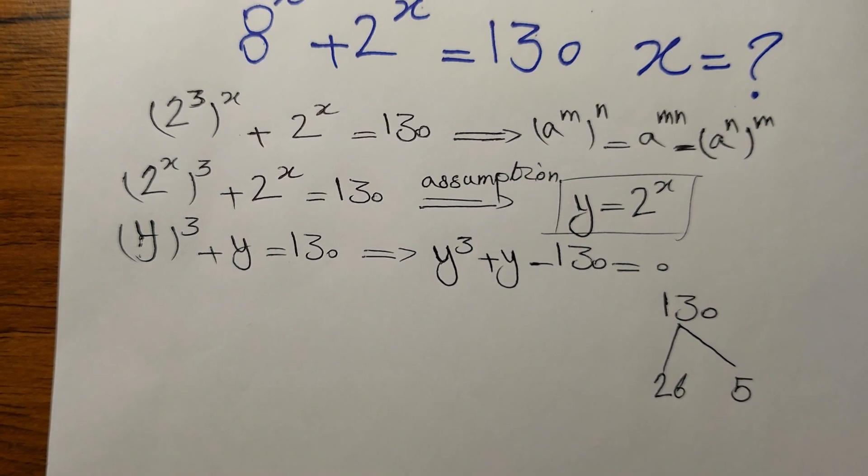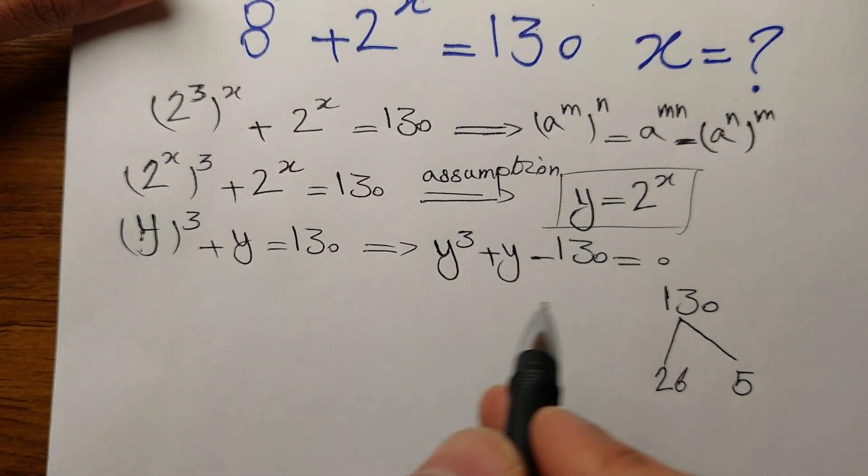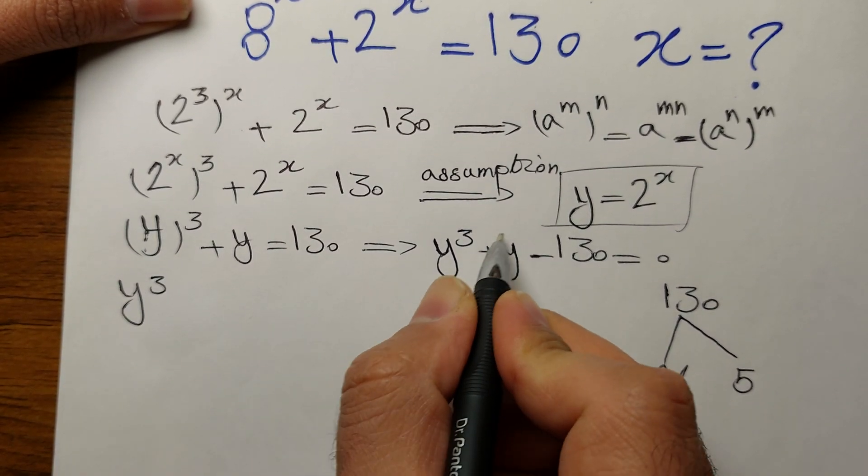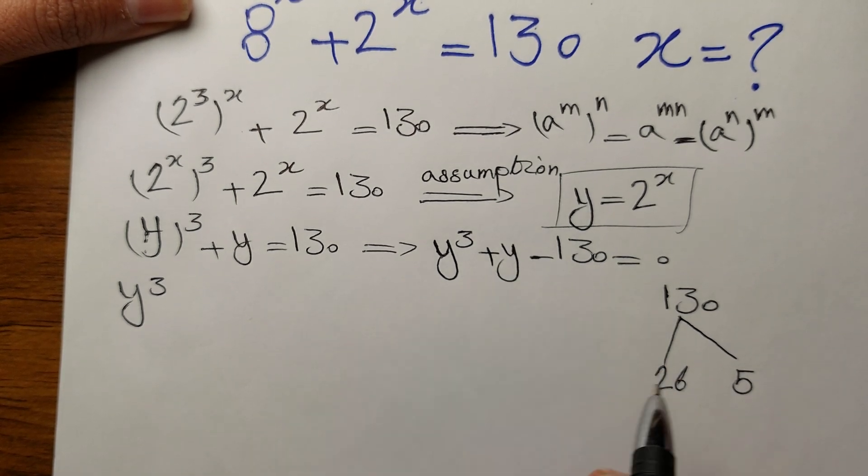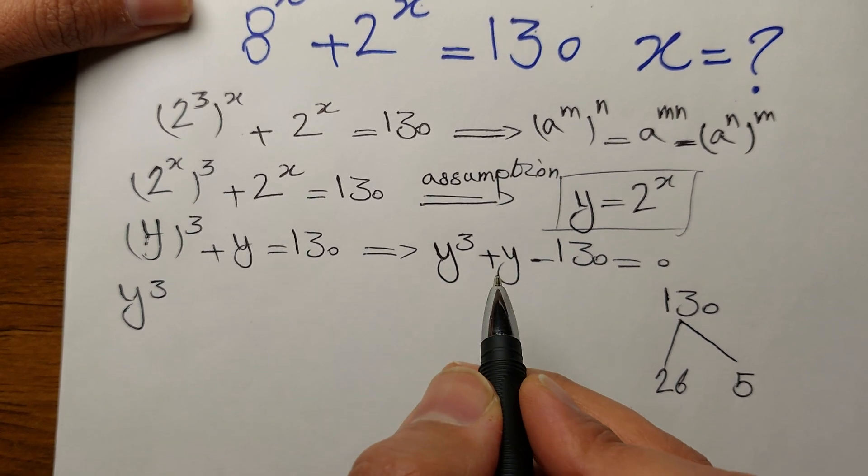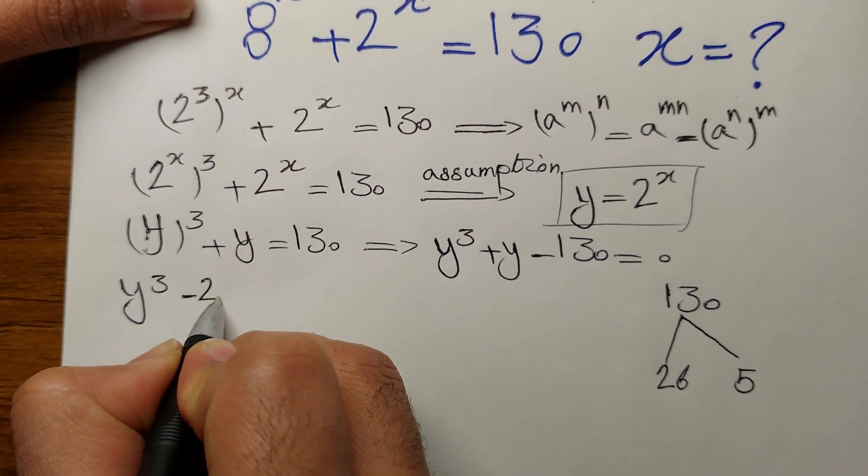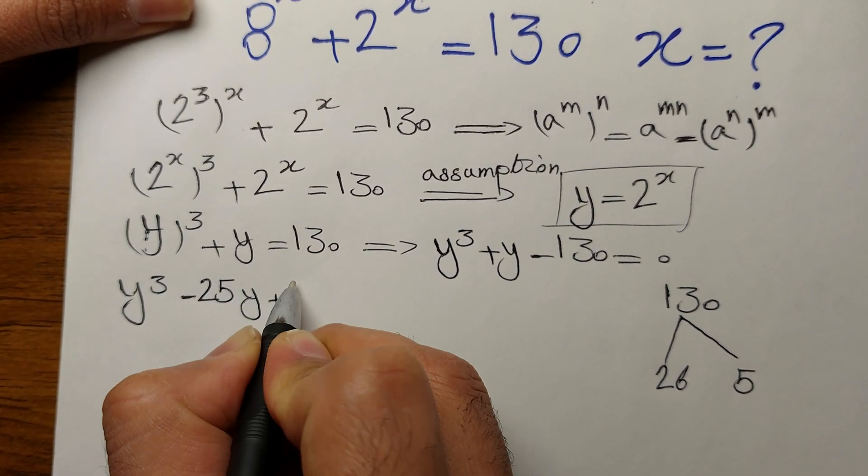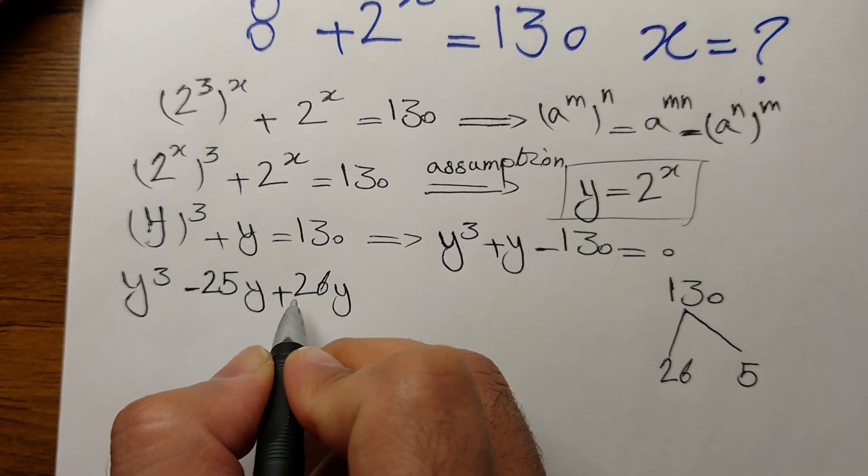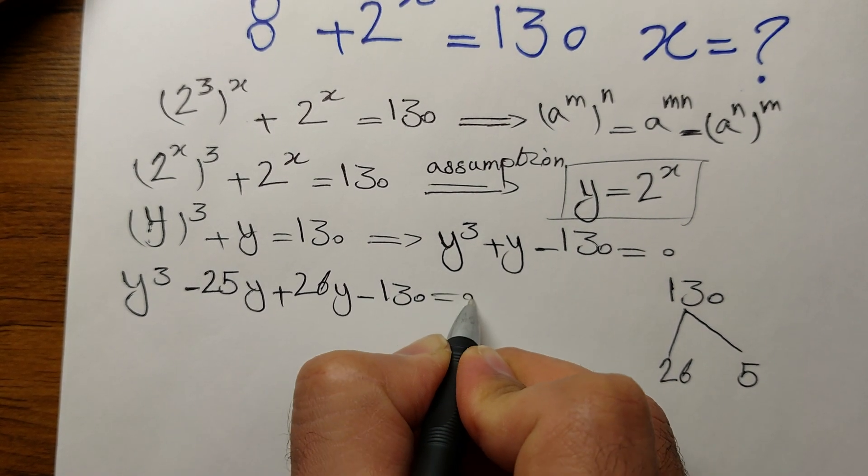Let's rewrite this thing as: y cubed, let's rewrite y as 26y because we need to factor it out. 26y minus 25y. So minus 25y plus 26y. So it is still 1y, right? There is no argument over this. So this is y. We just rewrote it. Minus 130 equals 0.